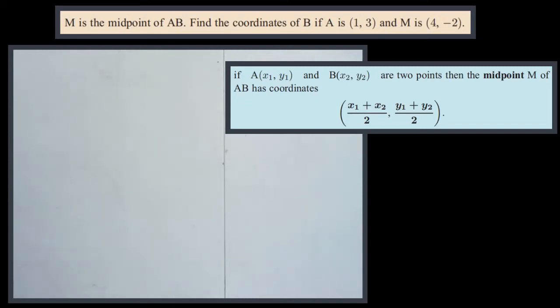M is the midpoint of AB. Find the coordinates of B if A is at (1,3) and M is at (4,-2). So we've been given the endpoint A and the midpoint M, and we need to find the other endpoint which is going to be exactly the same distance away.